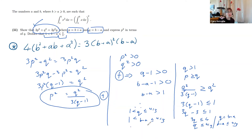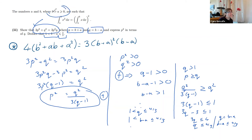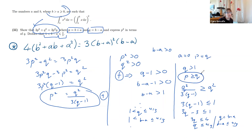So b minus a is bounded: 1 is strictly less than b minus a which is less than or equal to 4 thirds. The strict inequality follows because p squared and q squared must be strictly positive — p is positive since b plus a is positive, and q is positive since b minus a is positive. The non-strict inequality applies because a can equal zero, in which case p equals q, giving 4 thirds as shown in part one.